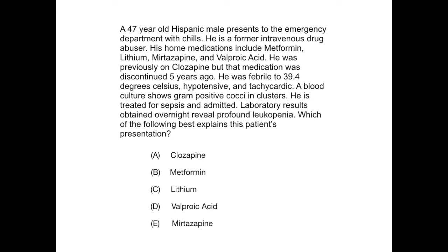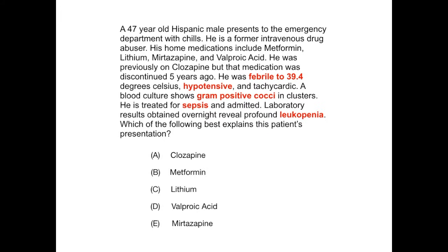The first thing you need to highlight in your brain from the clinical vignette — shown here in red — is: he's febrile to 39.4, hypotensive, has gram-positive cocci in clusters, is treated for sepsis, and is leukopenic. He meets SIRS criteria and sepsis criteria because he has SIRS plus an identified organism in the blood. He meets septic shock criteria because of hypotension and end-organ damage, and likely meets severe sepsis criteria as well. Whichever medication is causing this is really significant — his white blood cell count is very, very low.